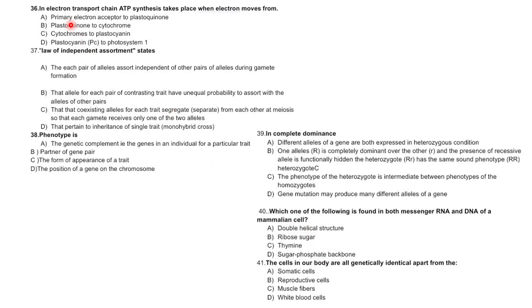In the electron transport chain, ATP synthesis takes place when electrons move from primary electron acceptor to plastoquinone, plastoquinone to cytochrome, cytochrome to plastocyanin, or plastocyanin to photosystem I — this is the most appropriate option.